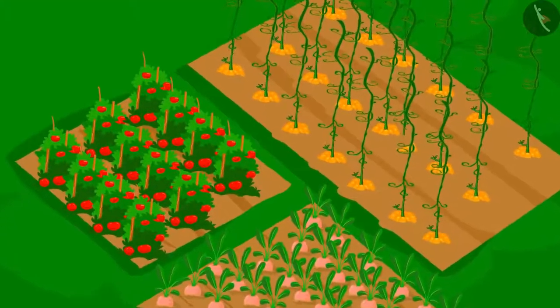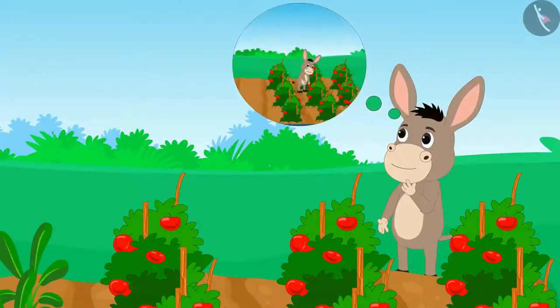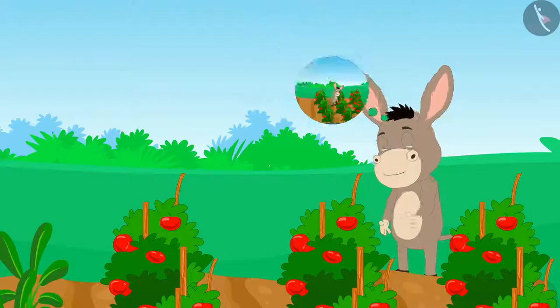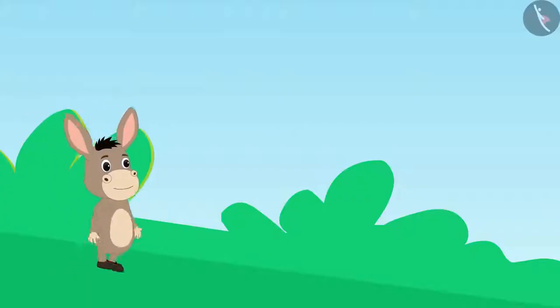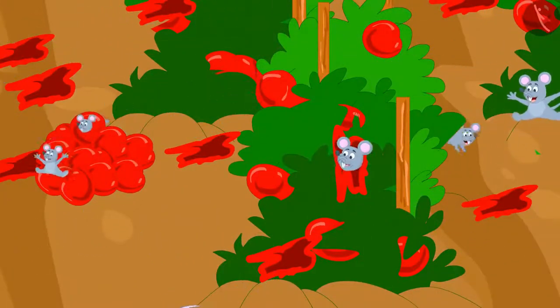Bhola's farm has had a very good crop this time. He thought he would come back the next day and harvest his crop. The next day, when Bhola reached his farm, he saw that mice had created havoc there.